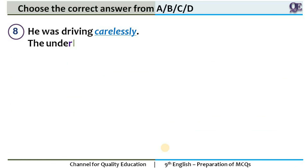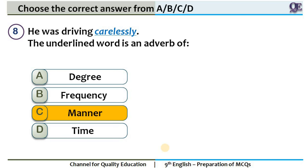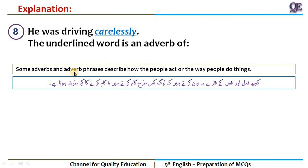Question 8: 'He was driving carelessly.' The underlined word is? 10 seconds. The answer is adverb of manner. Some adverbs and adverb phrases describe how people act or the way people do things. Here the manner is being discussed — how he is performing the action. 'He was driving carelessly' — he was driving without care. The -ly at the end tells you it is an adverb, and 'carelessly' shows manner. So you immediately choose adverb of manner.